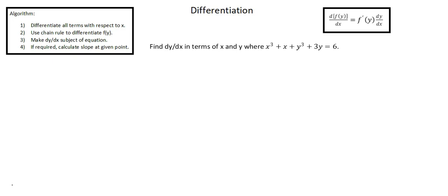We have an algorithm — let's follow it. Step 1: differentiate all terms with respect to x. In this function, some terms are y functions and some are x functions. For the terms that are y functions, we move to step 2: use the chain rule to differentiate f of y. In the upper right-hand corner, I'm showing how we apply the chain rule to differentiate a function of y with respect to x. The result is the derivative of the function of y times dy over dx.